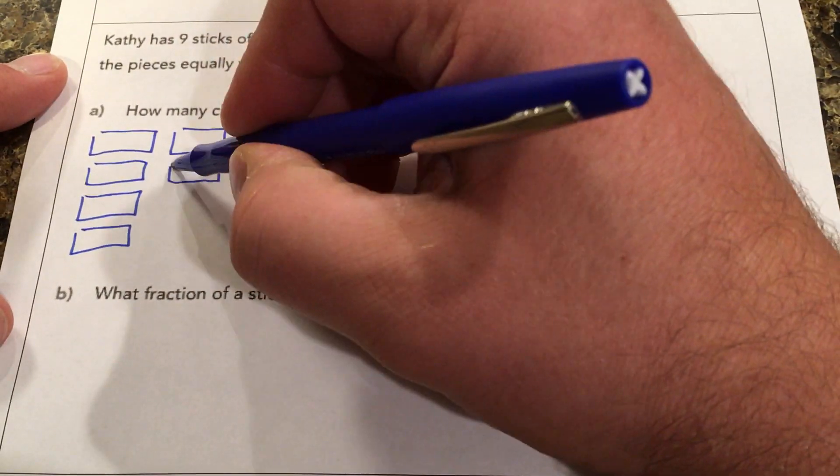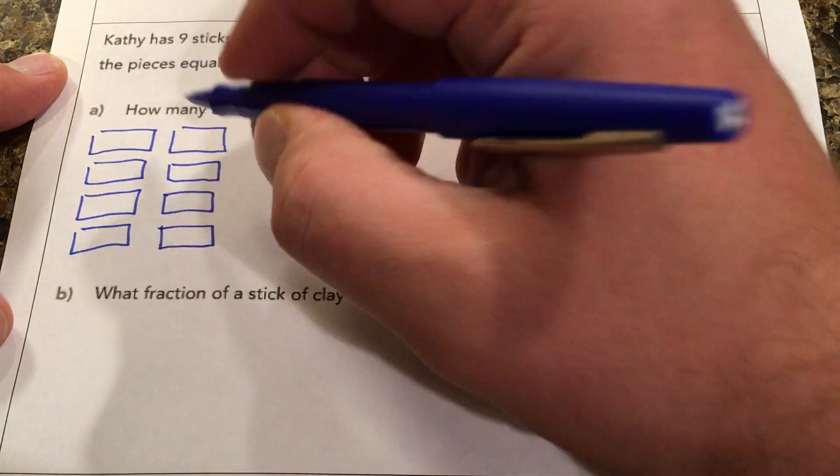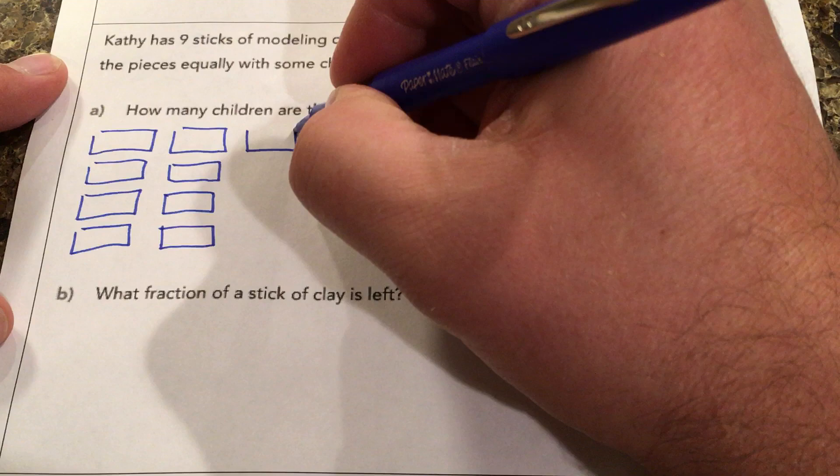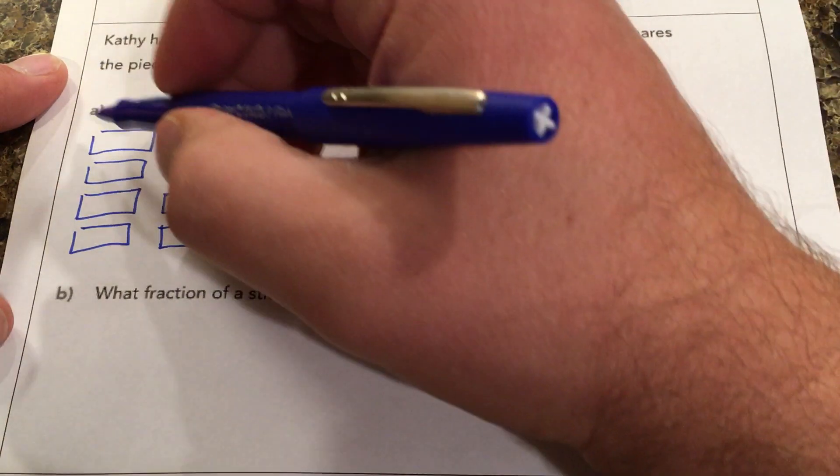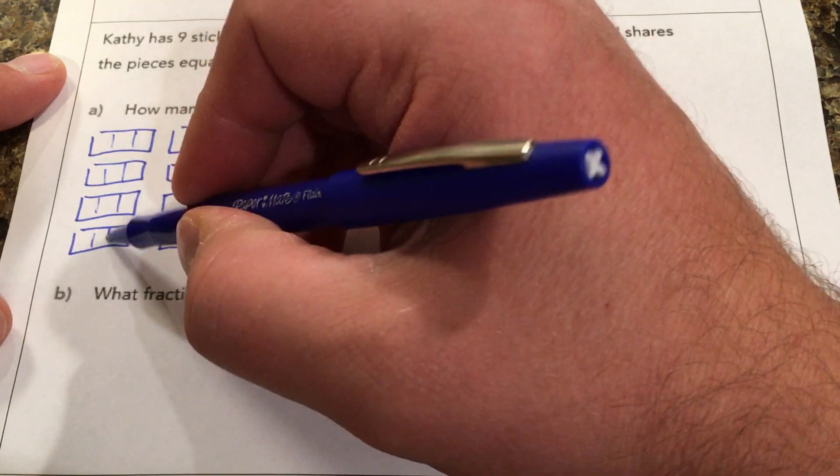Five, six, seven, eight, nine, and split them into thirds, just like Kathy did.